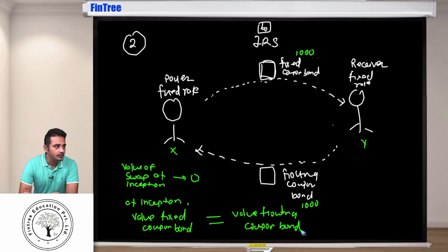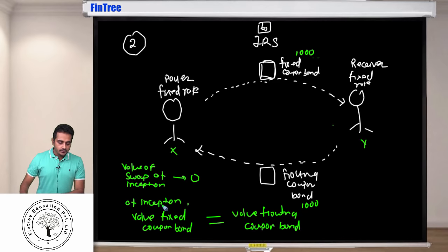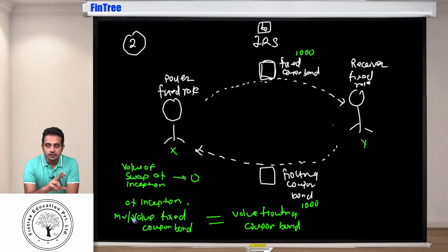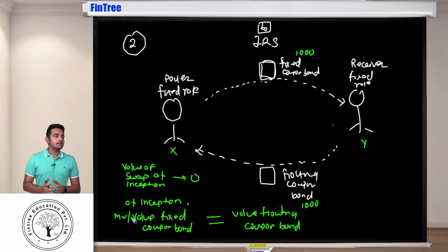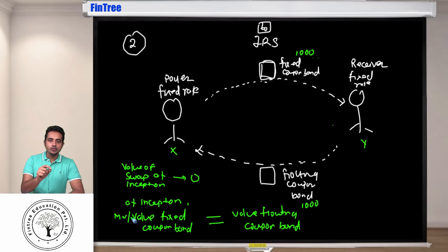None of the parties should profit simply by signing the agreement, because if one party profits just by signing, the other will never sign. Therefore at inception, the value of the fixed coupon bond must equal the value of the floating coupon bond. So we have learned two things: first, a swap is essentially a portfolio of bonds — one long, one short; second, at inception both bonds must be valued the same, which is why the portfolio value is 0.